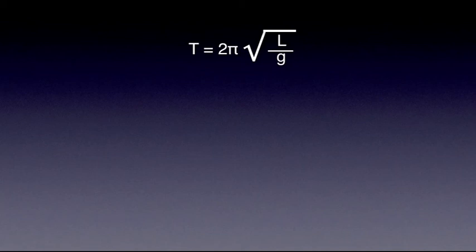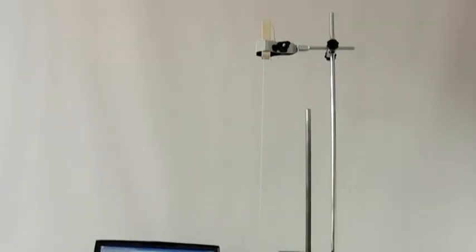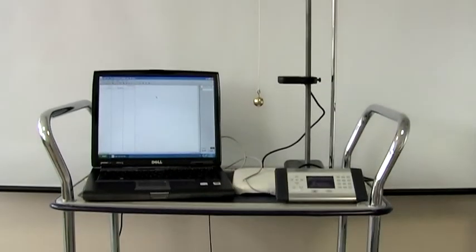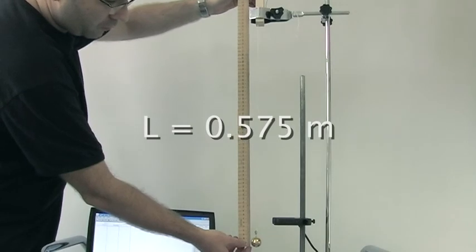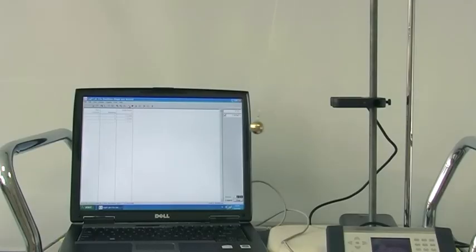If the length of a pendulum is known and its period is measured experimentally, the formula that gives us the period of such a pendulum can be used to determine G, the acceleration due to gravity. In the experiment shown on the screen, the length of the pendulum L and the period T are determined experimentally. From here, we can calculate G.